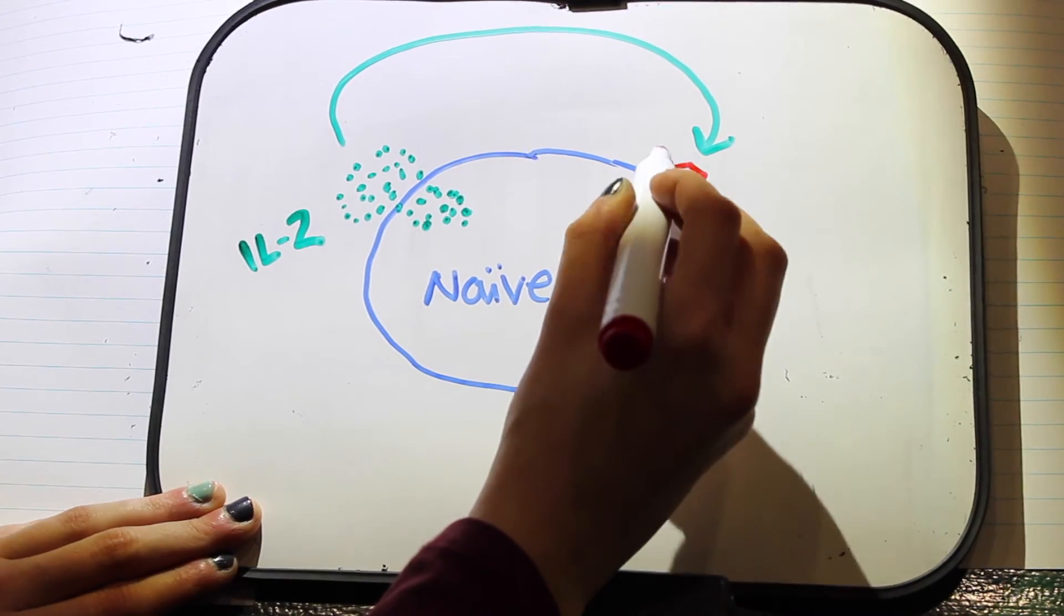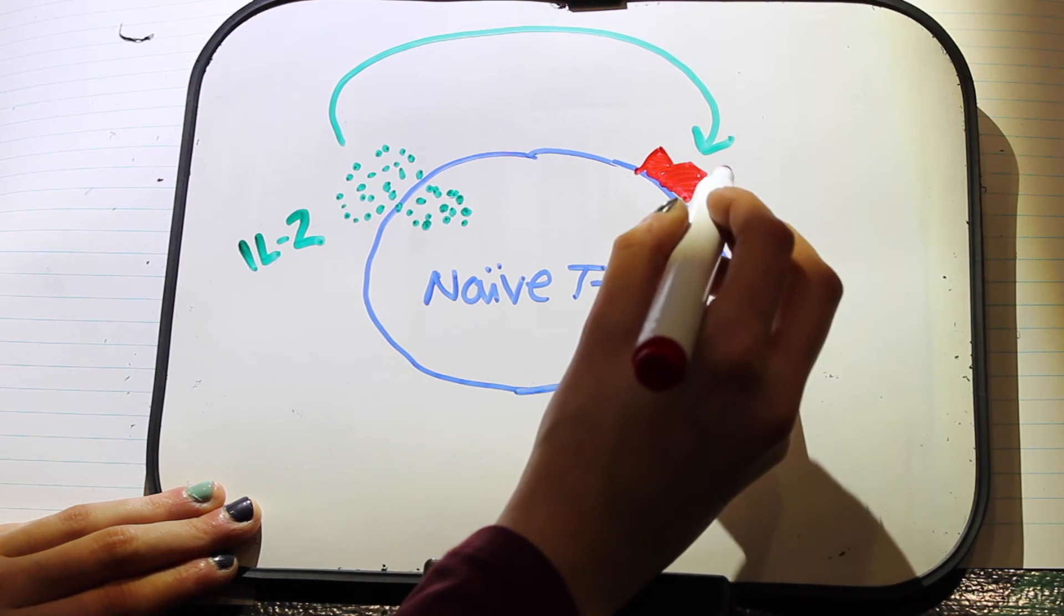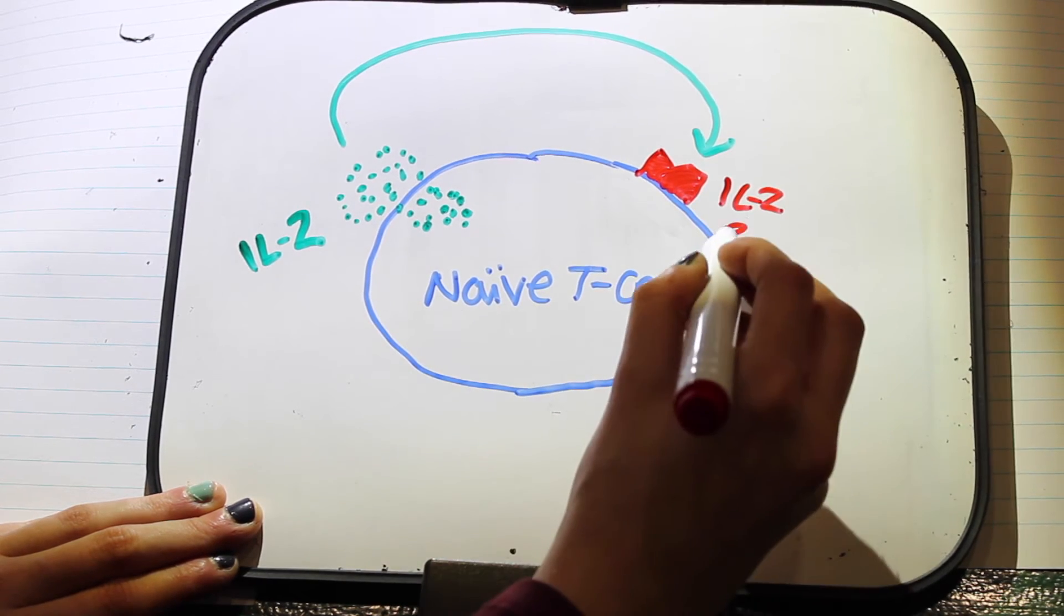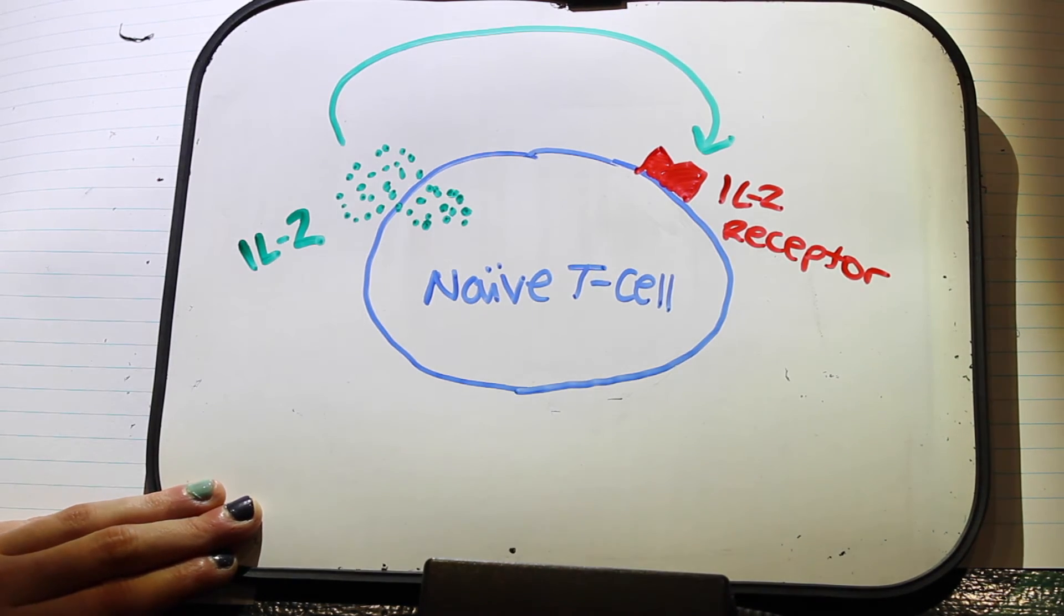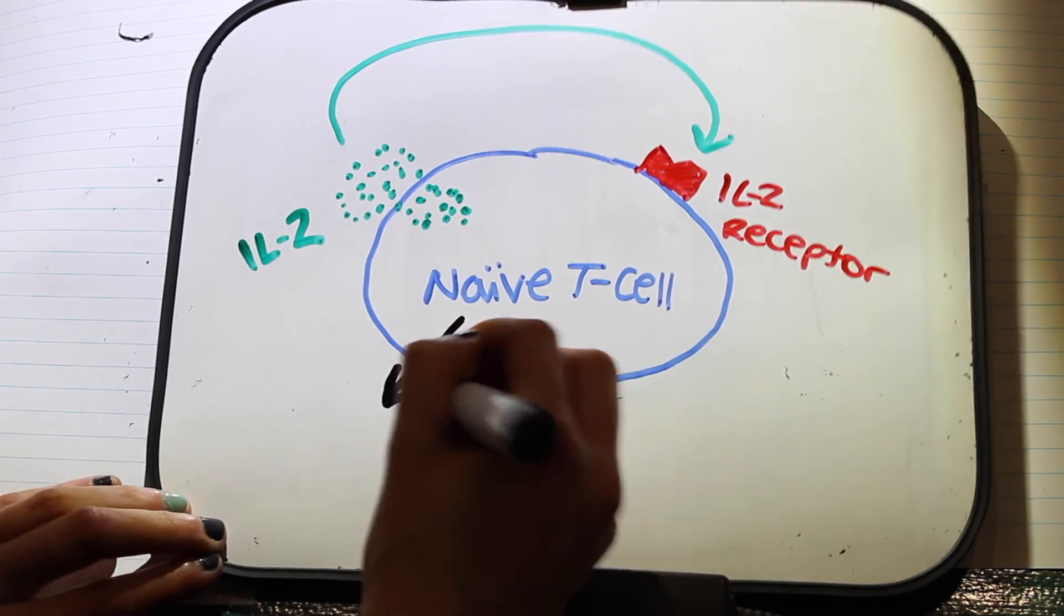B7 is a peripheral membrane protein found on the dendritic cell. CD28 interacts with B7, which activates the transcription factors that lead to the synthesis of IL-2, as well as the formation of IL-2 receptors on the surface of the naive T-cell.